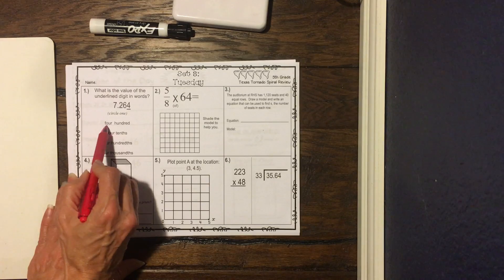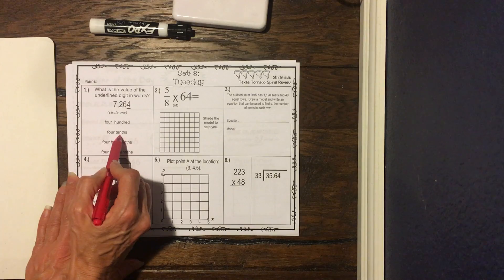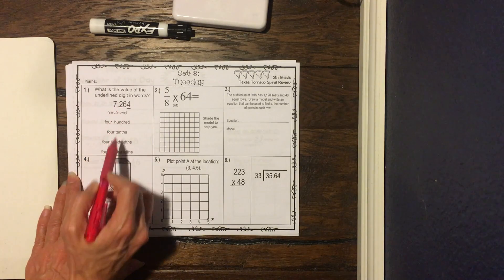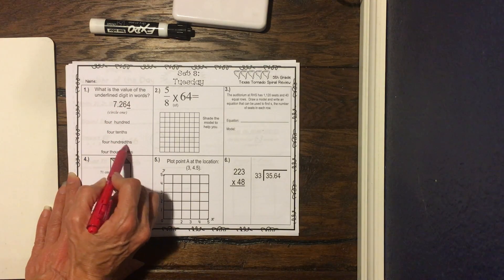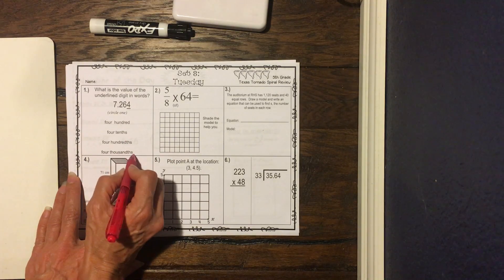We have the tenths, we have the hundredths, and we have the thousandths. So this number is worth four thousandths.